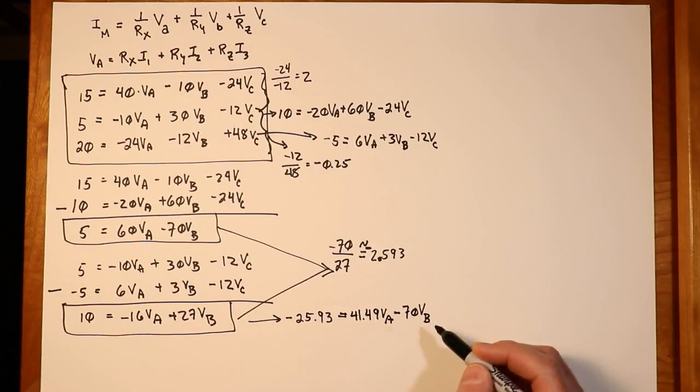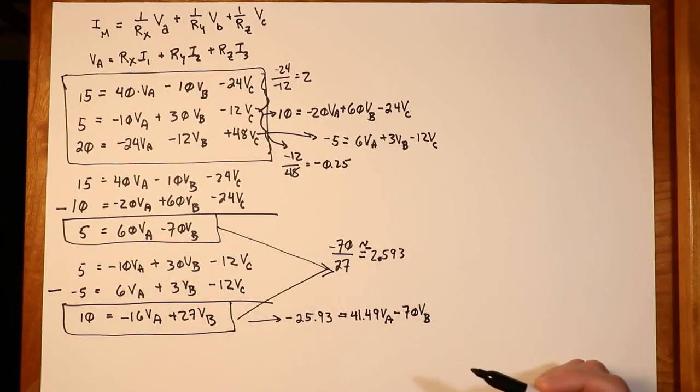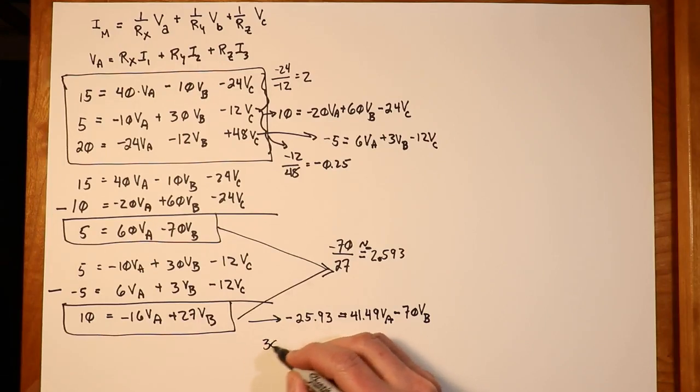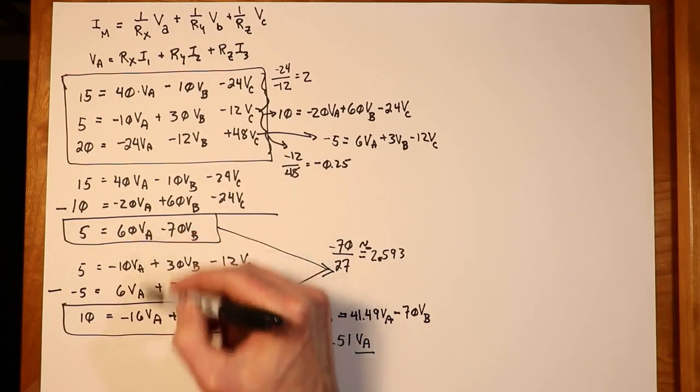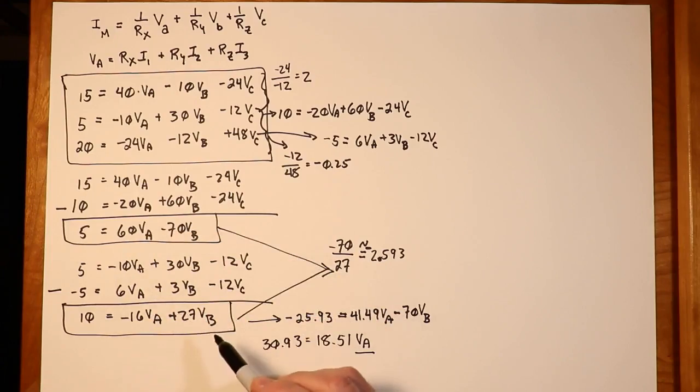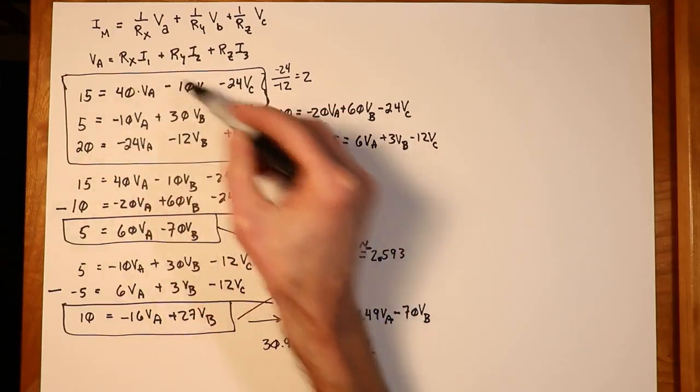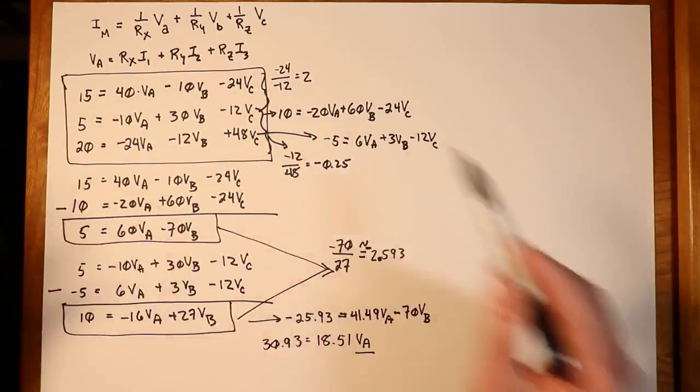Now I take this equation, subtract it from this equation, the Vb terms disappear, and all I'm left with is just a Va. So that's actually going to work out to like 30.93 equals 18.51 Va. When I do that, well, one equation, one unknown. I just solve this for Va. Now that I have the Va, I take that, put it back in one of these two equations, in which case I'll be able to solve for the Vb. Now I have the Va and the Vb. I can take those two, put them back in one of these three equations, and solve for the Vc, and I'll have everything. So that will complete the whole process.